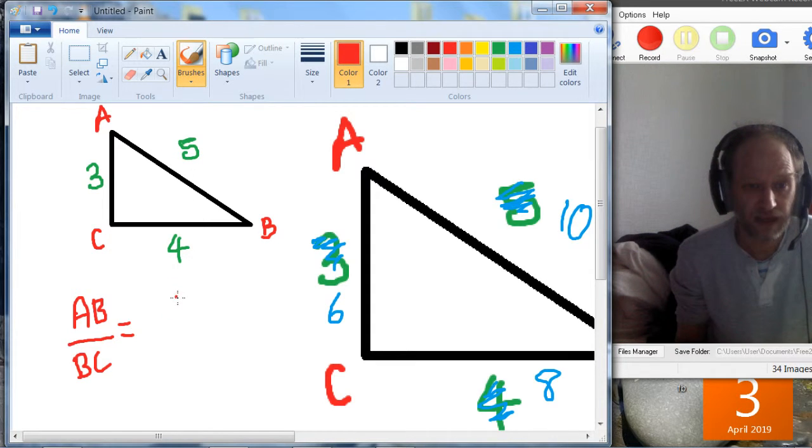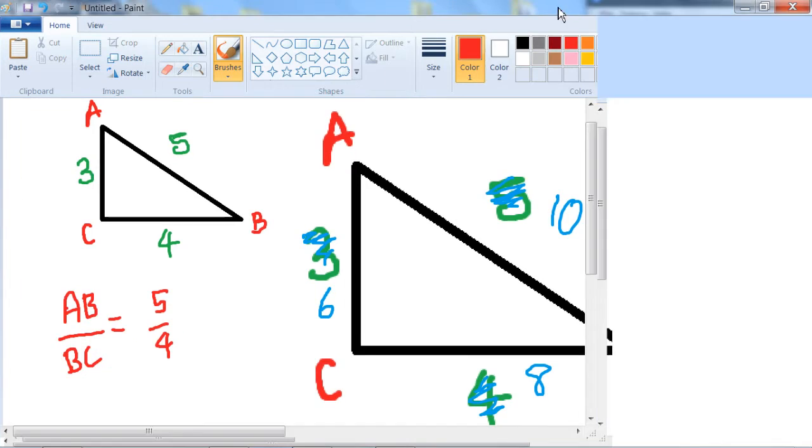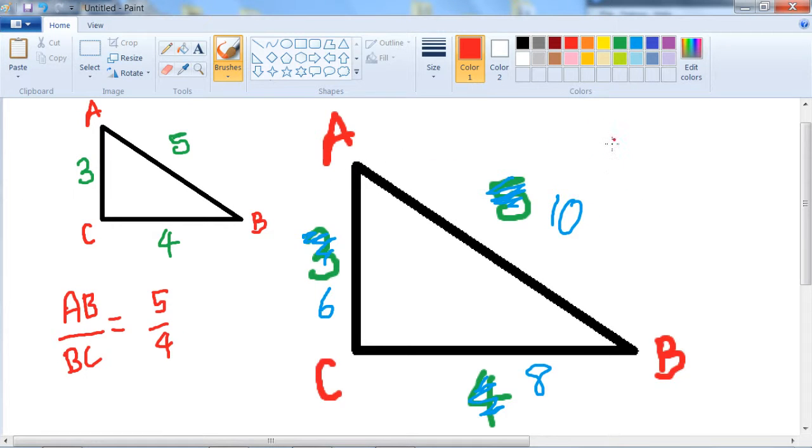So this is 5, AB is 5 over BC which is 4. And in the bigger version we've got AB over BC would be 10 over 8. And notice that the 2's cancel and then we get 5 over 4 so the numbers didn't change.